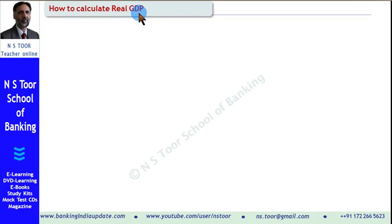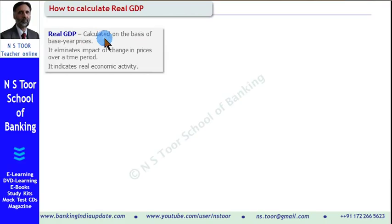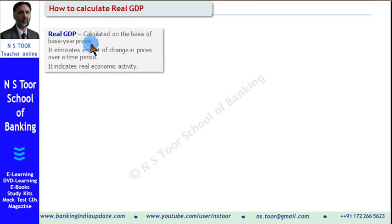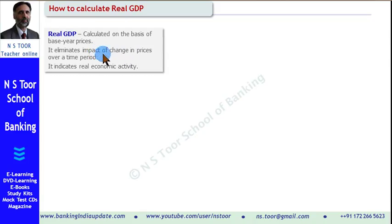What is Real GDP? Real GDP is the GDP which is calculated on the basis of base year prices. The benefit of making calculation on the basis of base year prices instead of current year prices is that it eliminates the impact of change in prices over a time period — means inflation. And when the impact of inflation is removed, the GDP indicates the real economic activity.